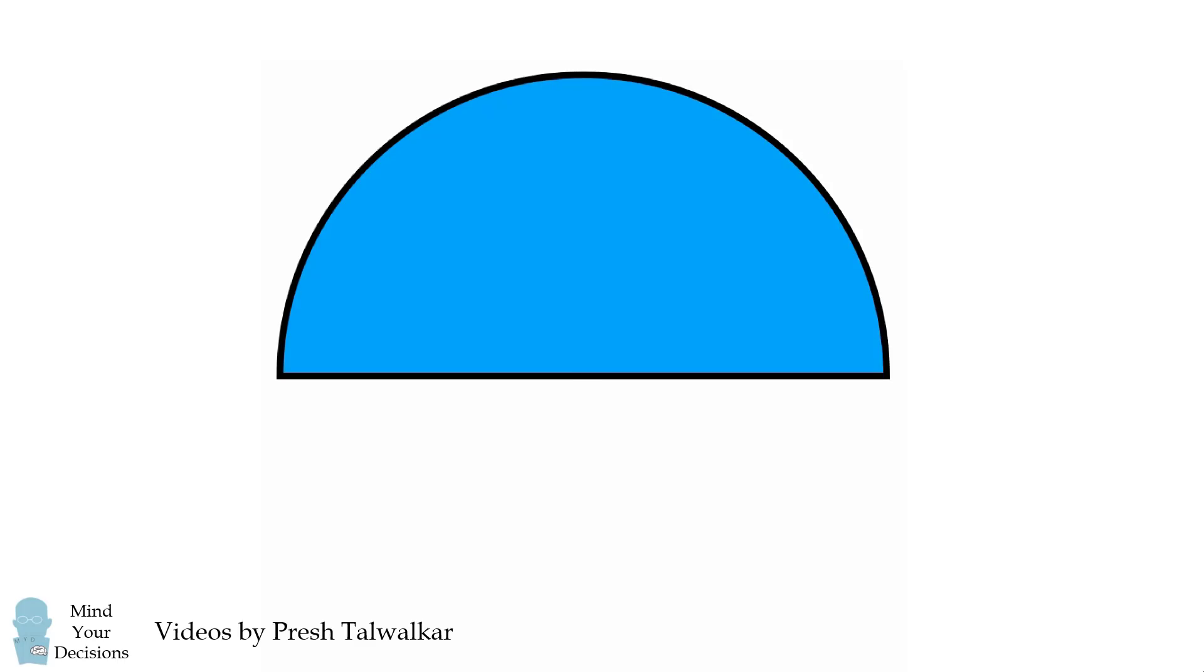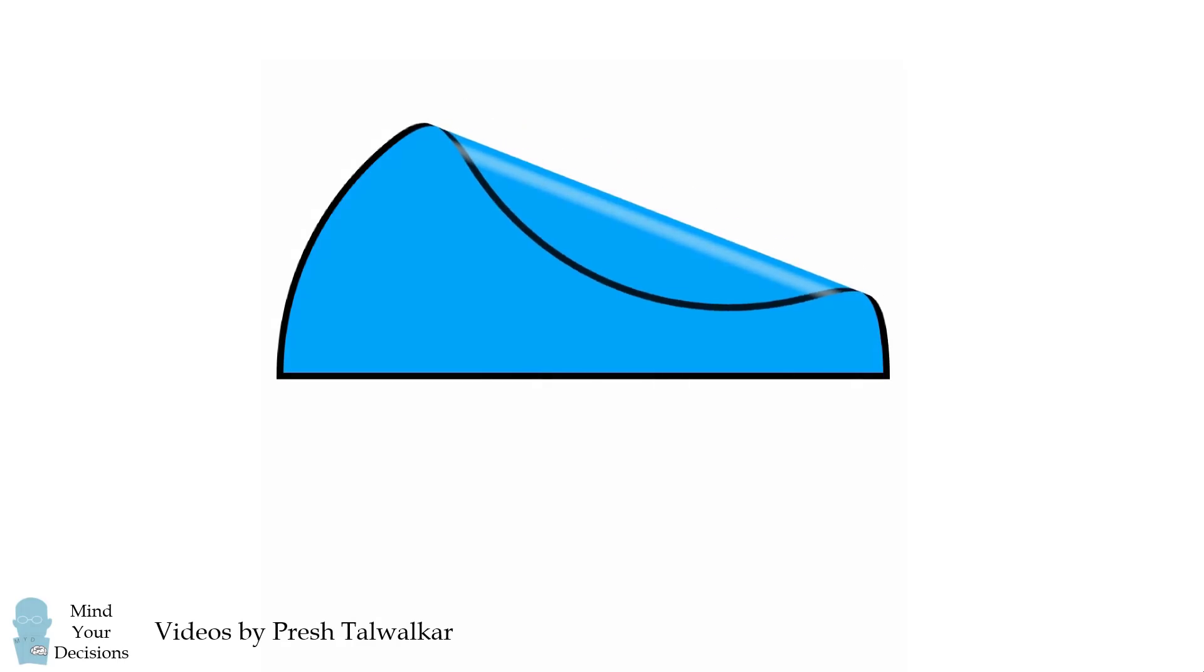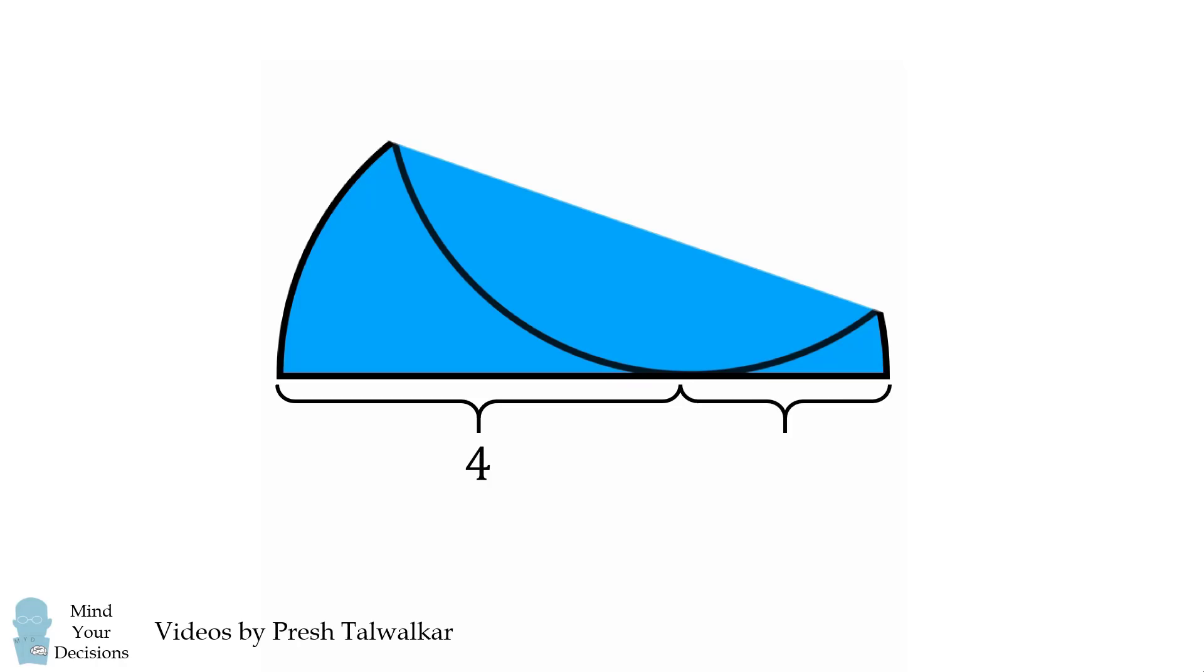Start with a semicircle. From the upper right corner, carefully fold a circular segment until it just touches the diameter and divides the diameter into lengths of 4 and 2. The question is what is the length of the folded line?